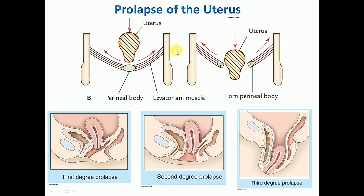If there is damage to the levator anae or perineal body, the uterus may sag down in a condition known as prolapse of the uterus. This is a very common condition after parturition or childbirth if the perineal body is torn or damaged and there is excessive stretching and tearing of the levator anae muscle fibers. There are various degrees of prolapse: first degree, second degree and third degree prolapse of the uterus.